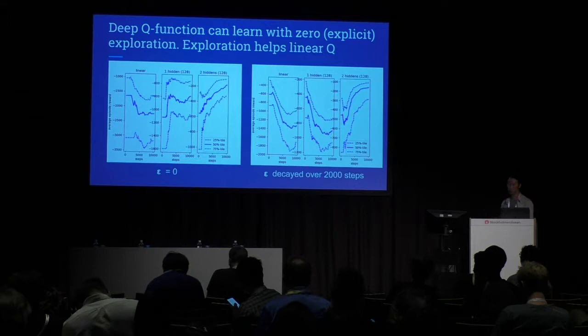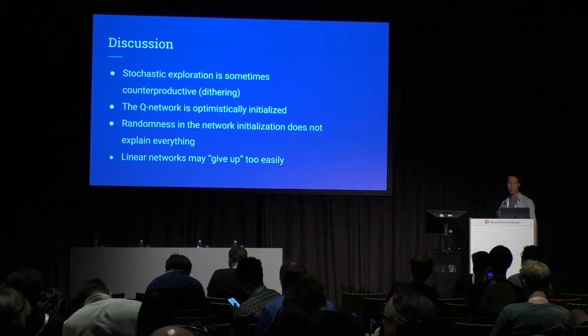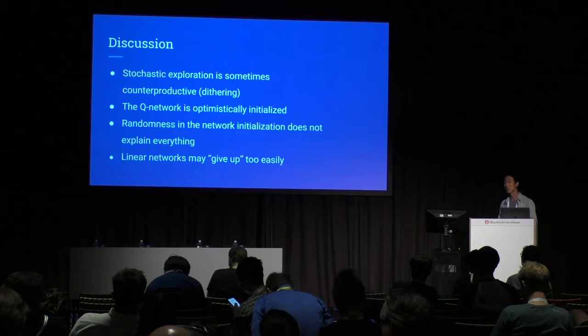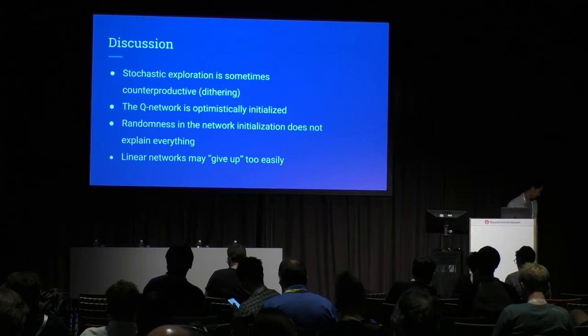There are many things to discuss. First, stochastic exploration is not the only approach — there could be a deterministic alternative. Optimistic initialization is important. There is randomness in the initialization of the network, but that doesn't explain everything. Our final thought is that linear networks might underfit and give up too easily.